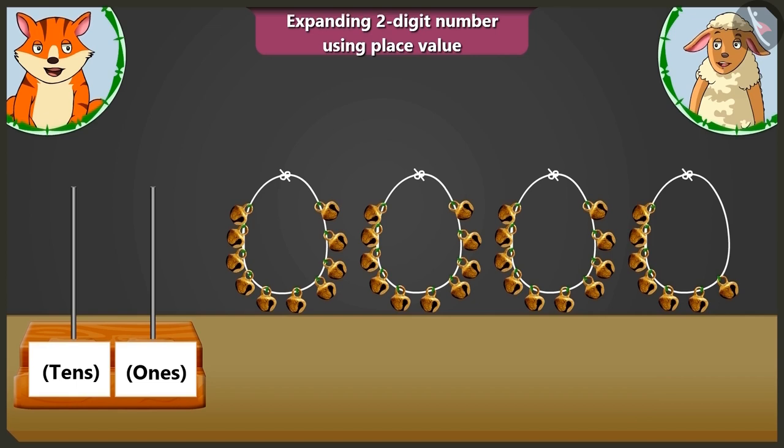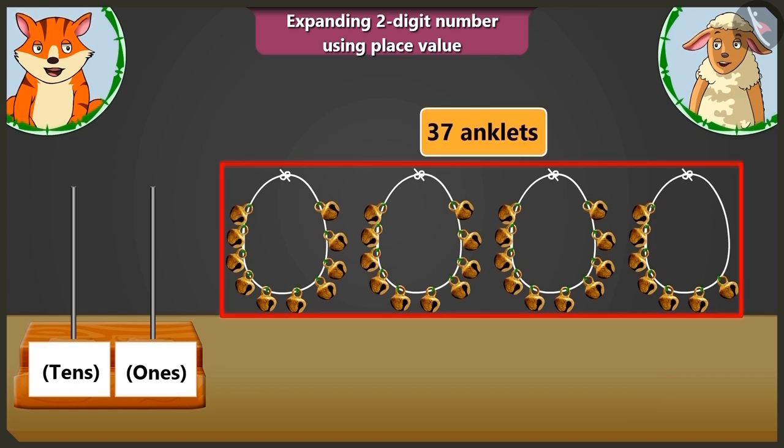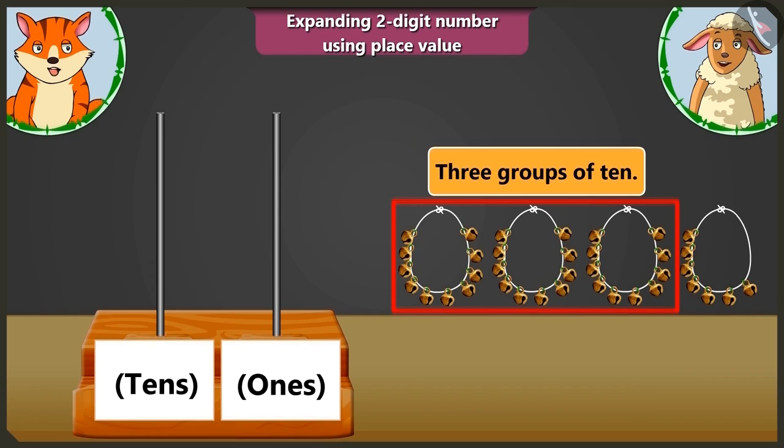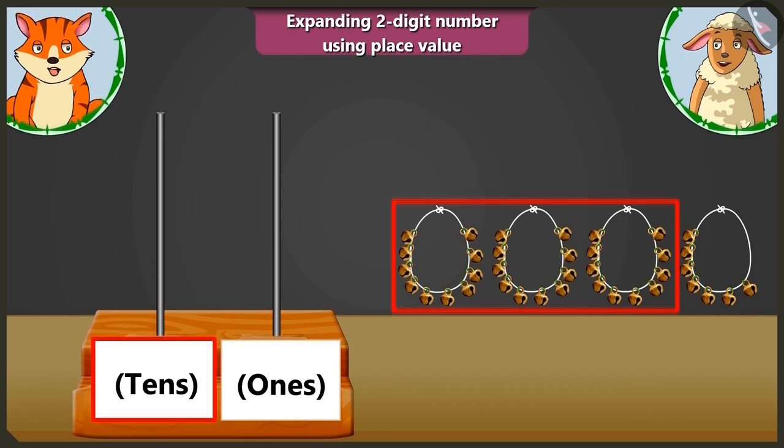It means the total number of beads are thirty-seven. Here there are three groups of tens. That's why I will put three beads in tens box and seven beads in ones box.